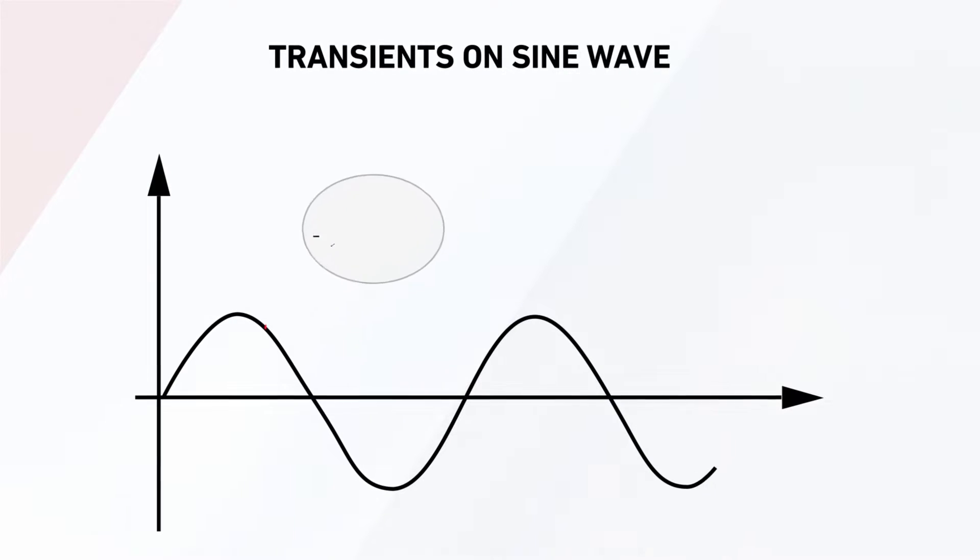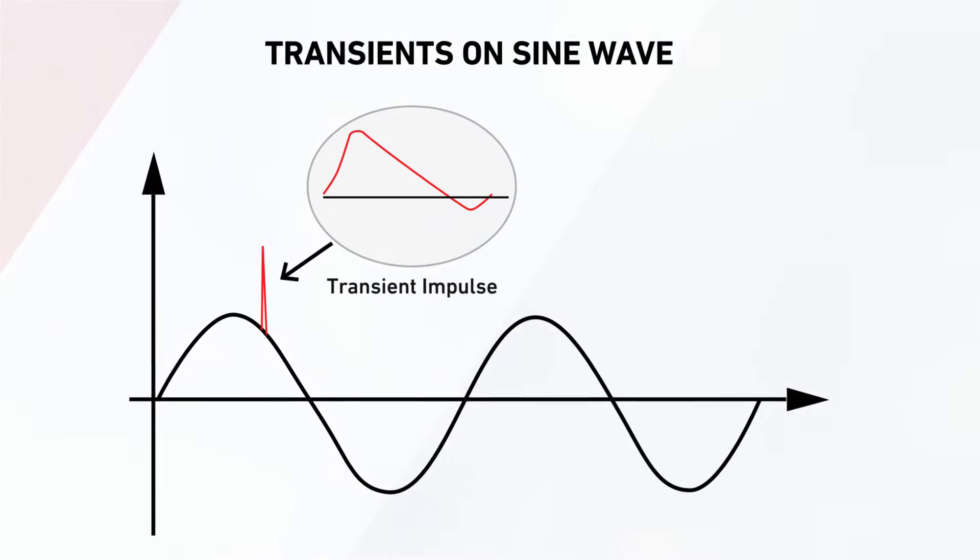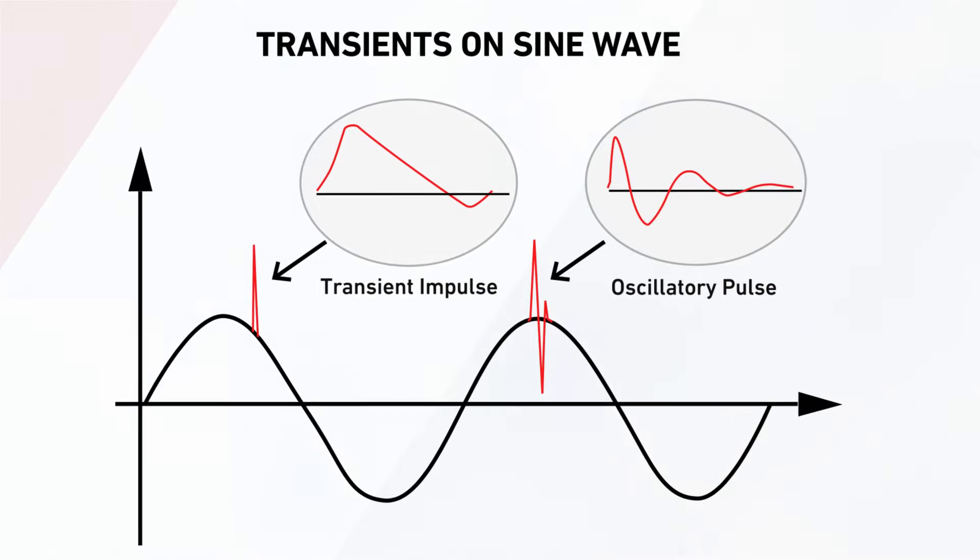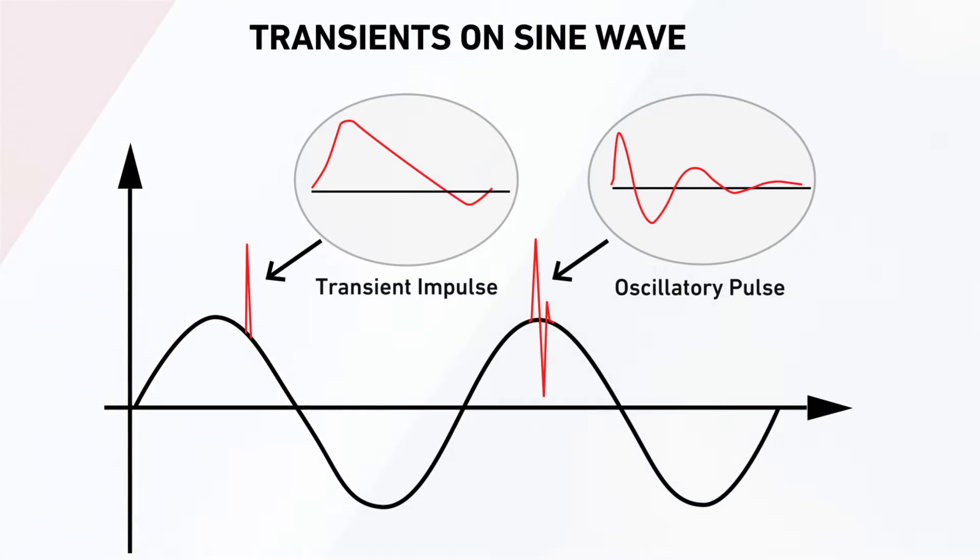Electrical transients are fast rise time, short duration energy pulses that are characterized by rapid changes in voltage and or current, often transmitted down data or power lines.